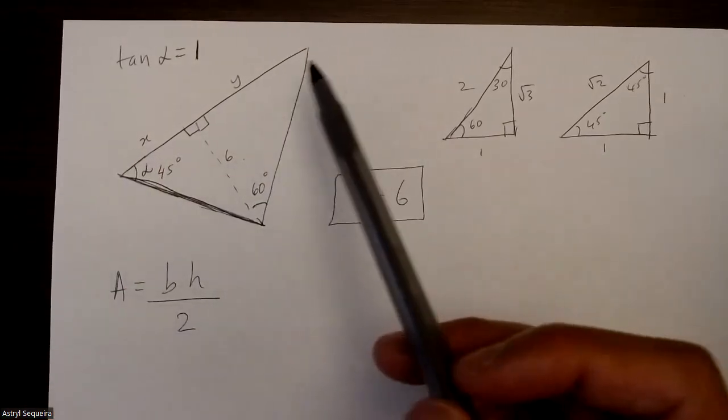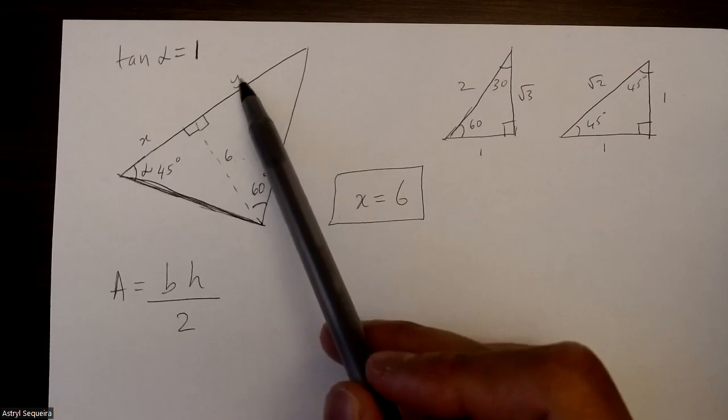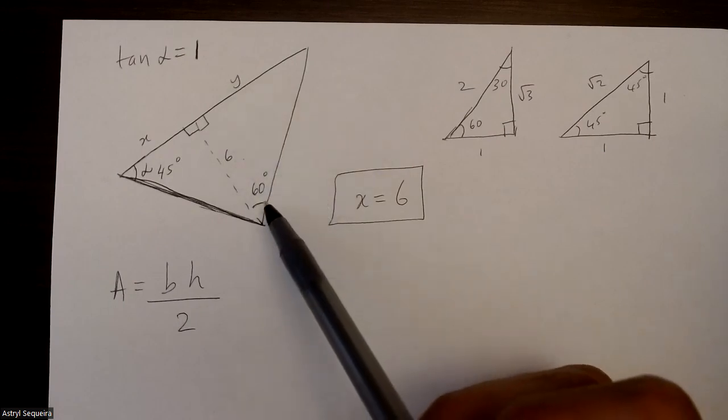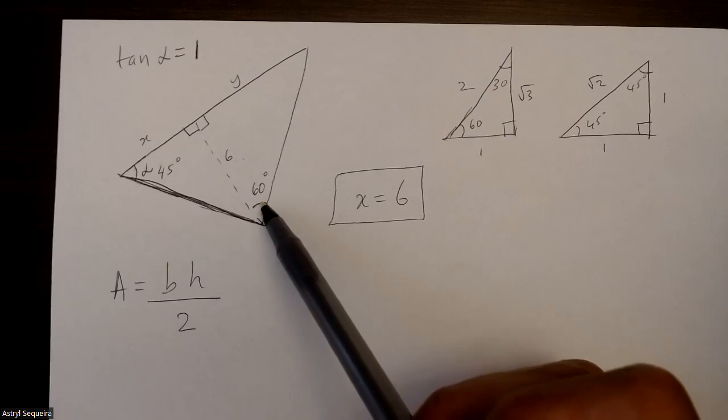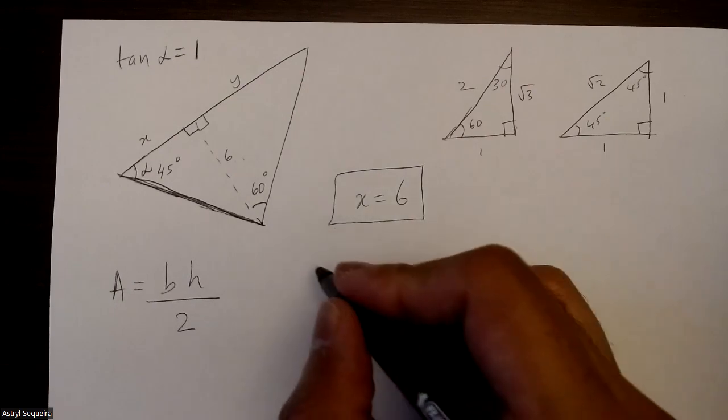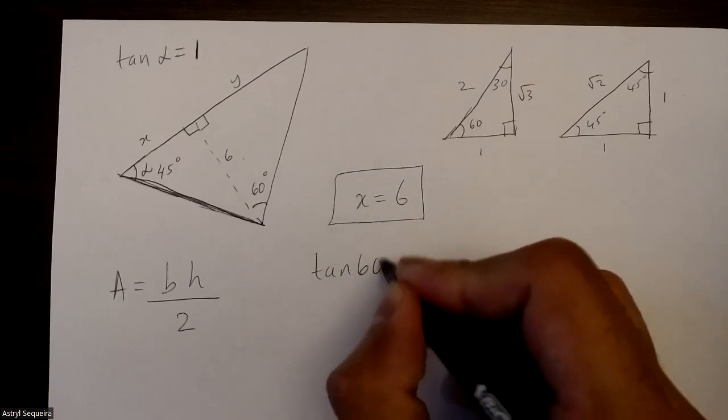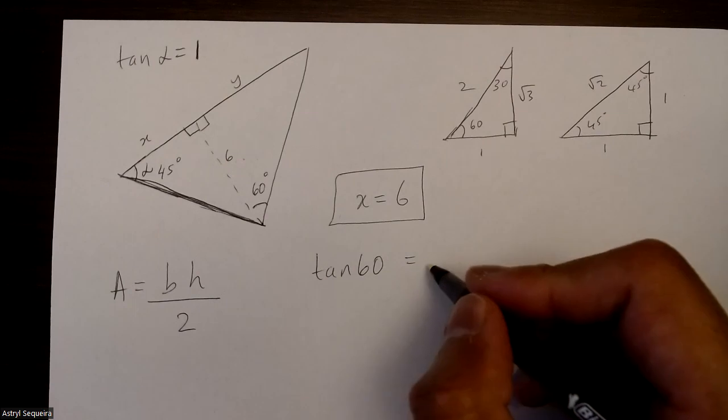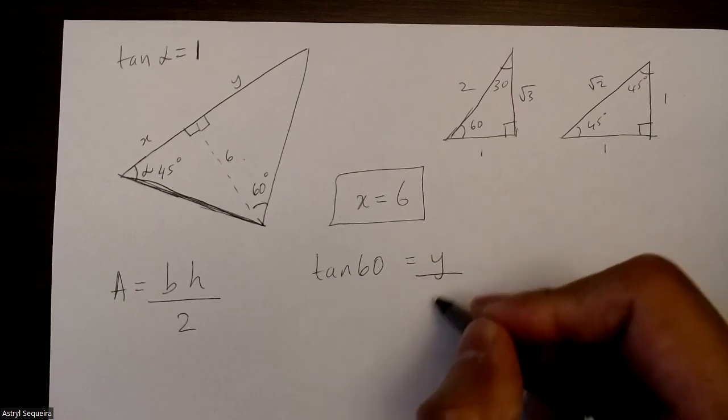Now I need to figure out y. To figure out why, I know that this is 60 degrees, so I can use SOHCAHTOA. In this case, it's my opposite and adjacent, so I'm going to use tan. So tan 60° equals opposite over adjacent, which is y over 6.